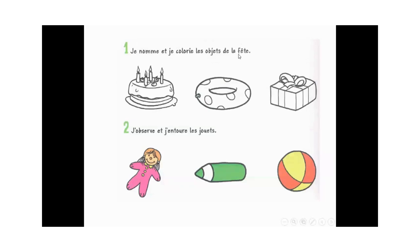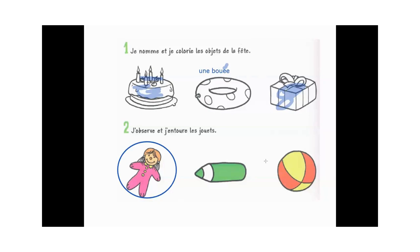Je nomme et je coloris les objets de la fête. Qu'est-ce qu'il y a dans la fête ? Il y a un gâteau, il y a des bougies, il y a un cadeau. Mais qu'est-ce que c'est ? C'est une bouée. Où je trouve la bouée ? Je trouve la bouée sur la plage. J'observe et j'entoure les jouets : une poupée — jouet ; balle — jouet. Qu'est-ce que c'est ? C'est un crayon — crayon, c'est un jouet ? Non, un crayon c'est dans la trousse, à l'école.